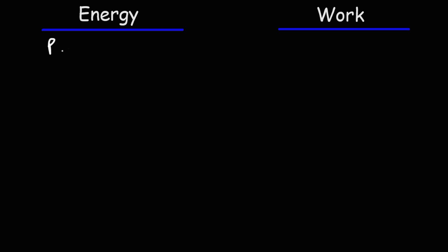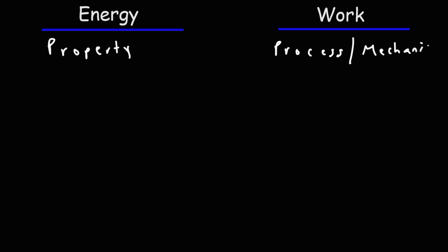Energy is a property — that's really what it is. Work is more of a process, a mechanism. Energy is really an extensive property of a system. It's something that the system possesses or owns. A system that has energy has the ability to do work.